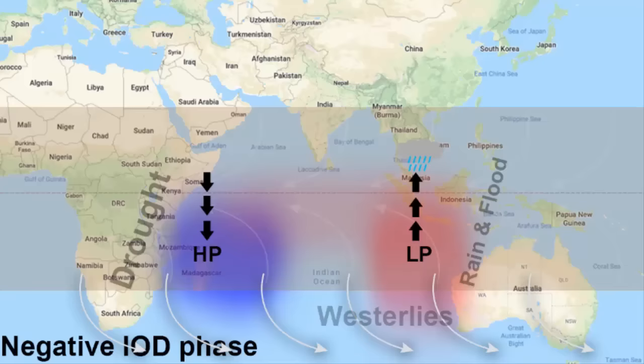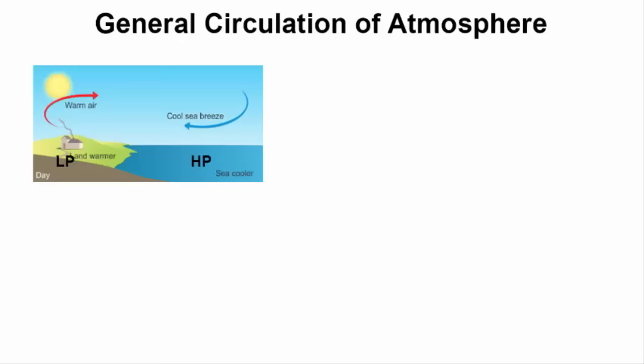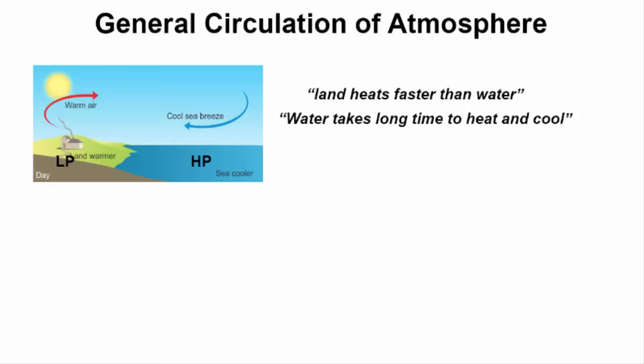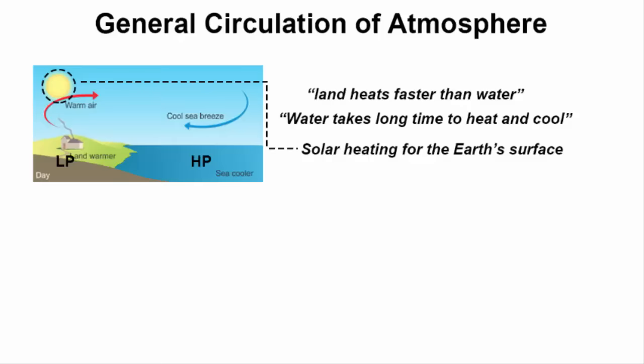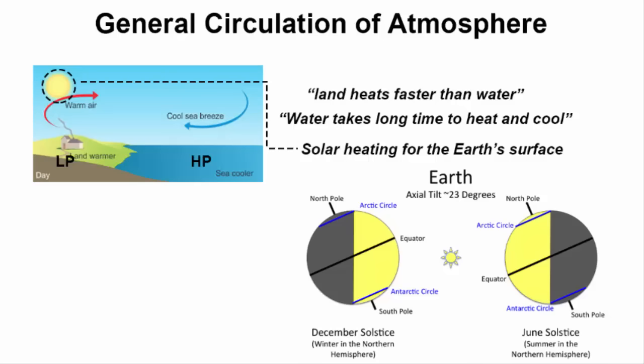Many of you might be wondering why the easterly and the westerly winds become strong and weak. The answer lies in the general circulation of the atmosphere — air moves between large high and low pressure systems, which creates the global wind belts that profoundly affect regional climate. High and low pressure systems are created due to uneven heating of the earth's surface, because land heats faster than water. In a nutshell, it is due to solar heating of the earth's surface, and earth's axial tilt causes different seasons. That is the logical reason behind why the easterly and westerly winds become strong and weak.